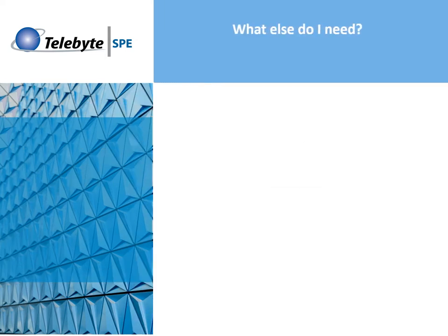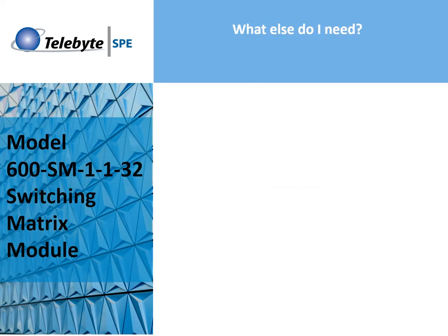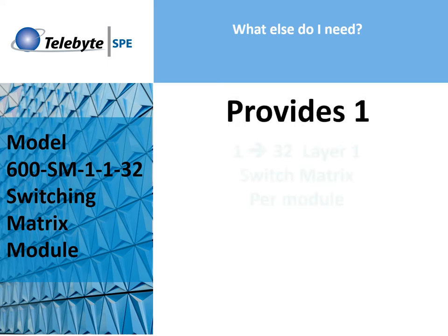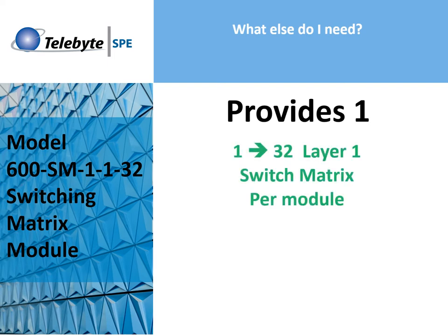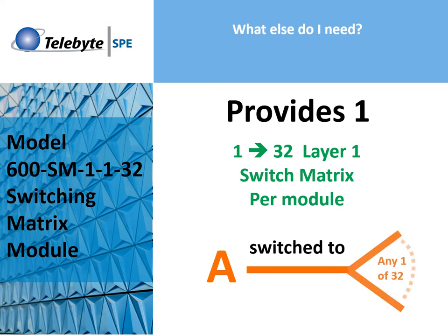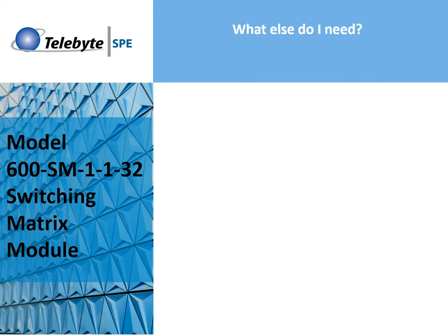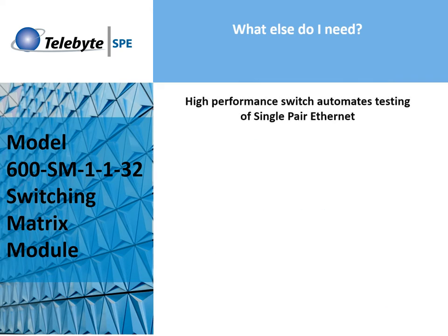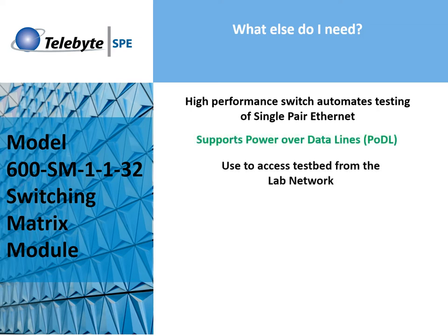What else do we need? The Telebyte 600SM 1x1x32 switching matrix module provides one 1x32 switching matrix. This device has one input that is switched to any one of 32 outputs. Our example will require one module for switching on one side of the single pair. This high performance switch automates testing of single pair Ethernet, supports Poodle, and can be used to access the testbed from the lab network.